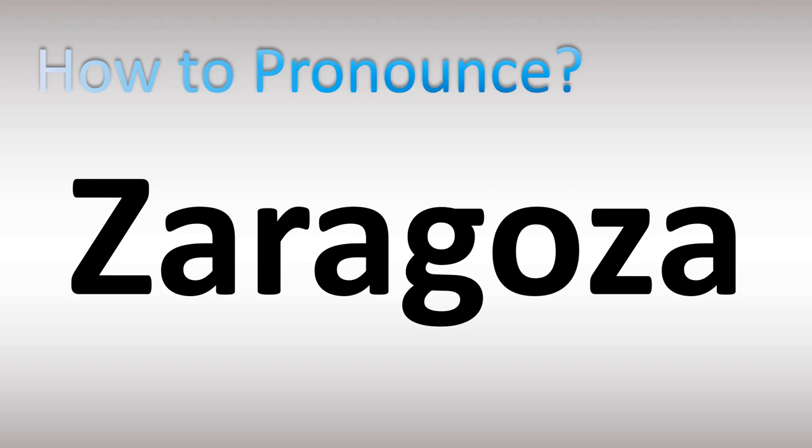For reference, in Spanish in many parts of Spain it's pronounced as Zaragoza. So in many parts of Spain the Z is pronounced like a TH — Zaragoza, Zaragoza.